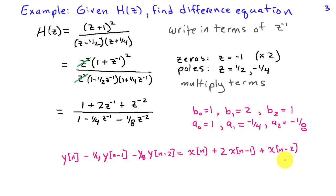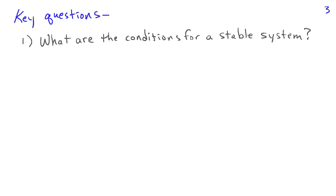So given these descriptions for a system, we have some key questions that we're going to answer using the z transform. First of all, what are the conditions on the difference equation to get a stable system? Second, what are the conditions to get a causal system?